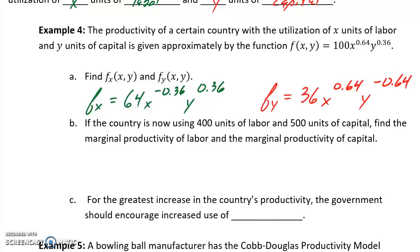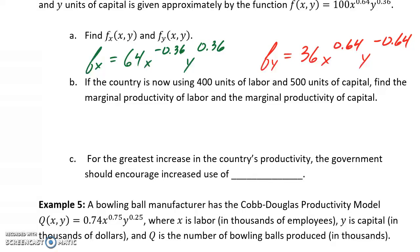Once we have our partial derivatives, we're then asked to find the marginal productivity of labor and the marginal productivity of capital. For the marginal productivity of labor, we want to evaluate the partial derivative with respect to x when we're utilizing 400 units of labor and 500 units of capital. We evaluate our partial derivative when x is 400 and y is 500 to calculate a marginal productivity of labor of 69.35.